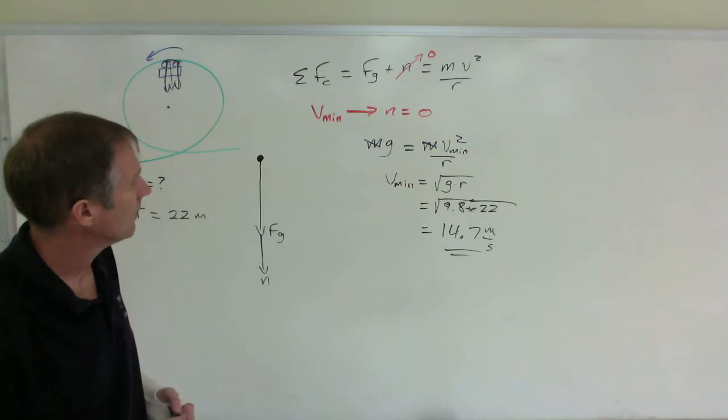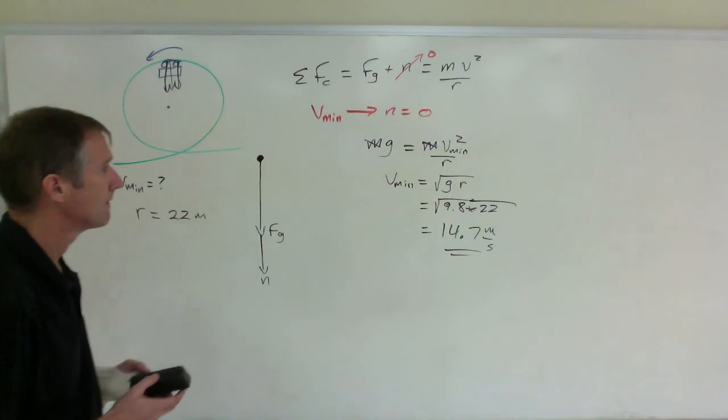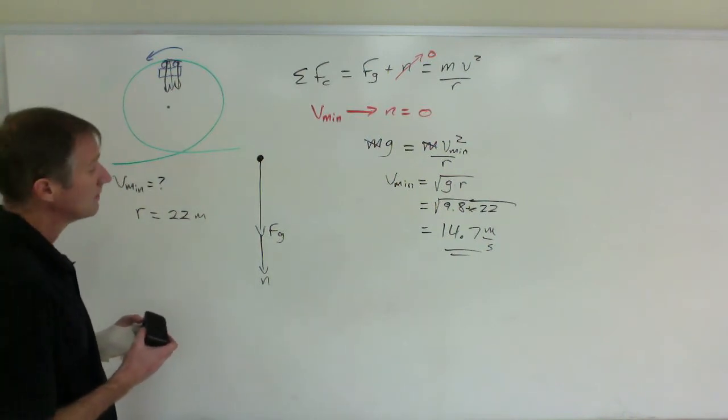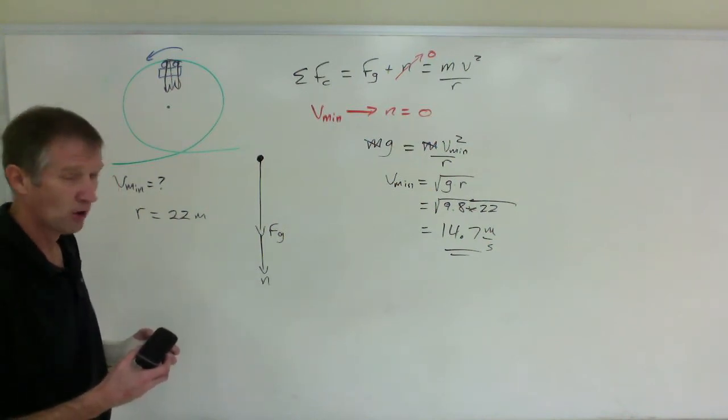About 30 miles per hour. If you go any slower than that, like 14.5 meters per second, uh oh, you'll become airborne.